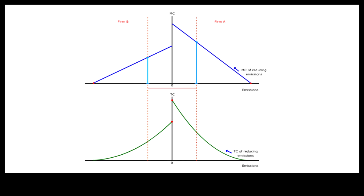The total cost of such uniform reduction is shown by stacking the total cost for Firm B on top of Firm A.